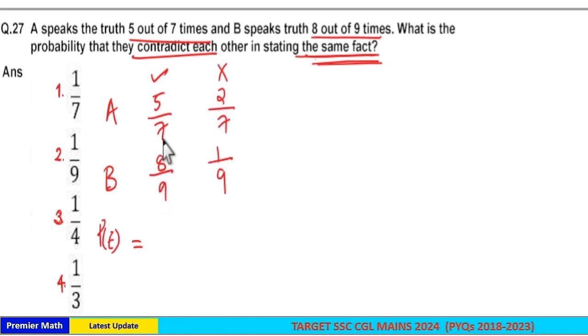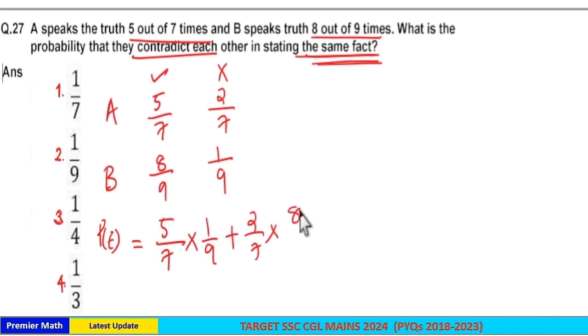That is when A speaks truth, that is 5 by 7, B should say lies. And when A speaks false statement, B should say true statement.